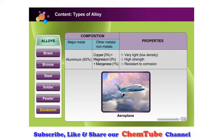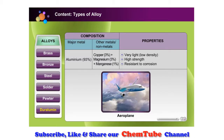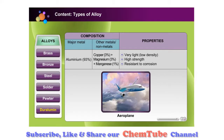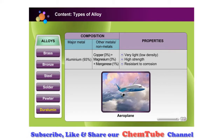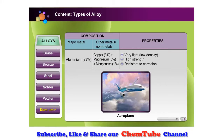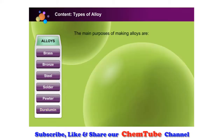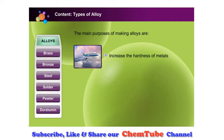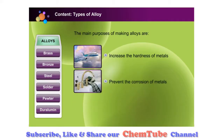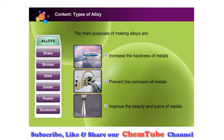From the properties shown, can you name the main purposes of making alloys? Yes, we make alloys to change the physical properties of the metal to suit our needs. These include increasing the hardness of metals, preventing the corrosion of metals, and improving the beauty and luster of metals.